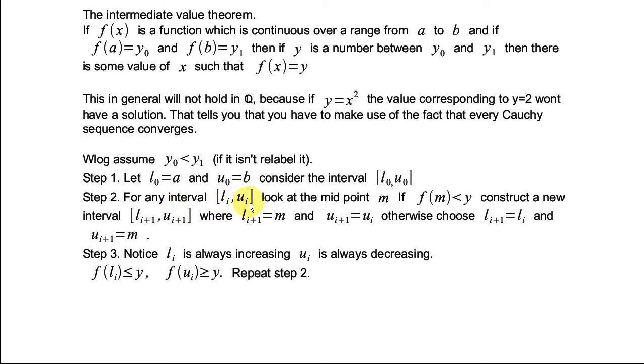Now, for any interval li ui, we look at the midpoint, and if the midpoint is less than y, then you construct a new interval li plus 1, ui plus 1, where the lower point is the new midpoint, and the upper point is what it was before. Otherwise, you do it the other way around, and you set the upper point to be the midpoint, and the lower point to be what it was before.